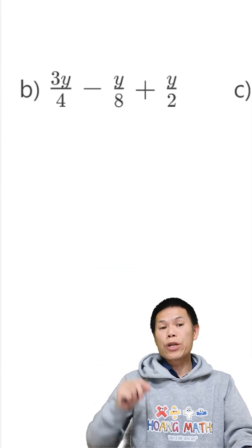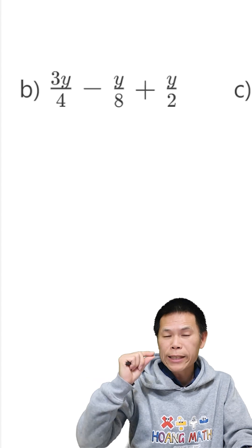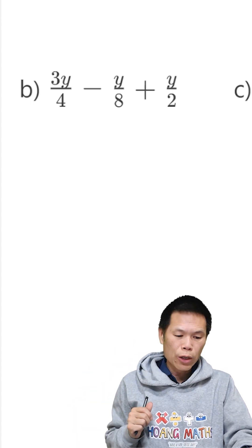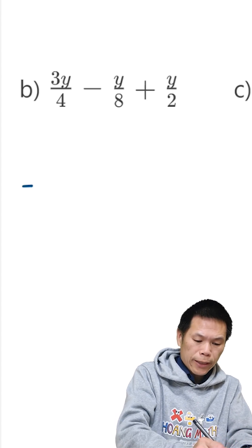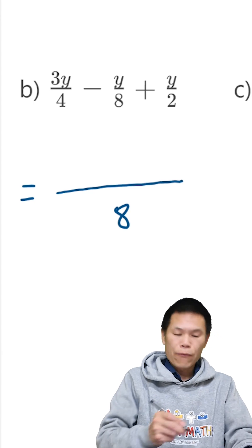Now part b. So we know that the lowest common denominator is 8 because 8 is a multiple of 4 and also a multiple of 2, so 8 is the lowest common denominator. Let me write this down, that is 8.